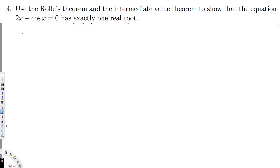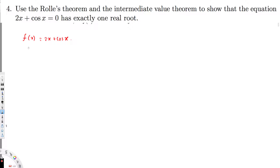Let's set up f(x) = 2x + cos x. We need to check some values and find one below zero and one above zero. If we find that, the function is continuous on these intervals and therefore there is a real root between them.